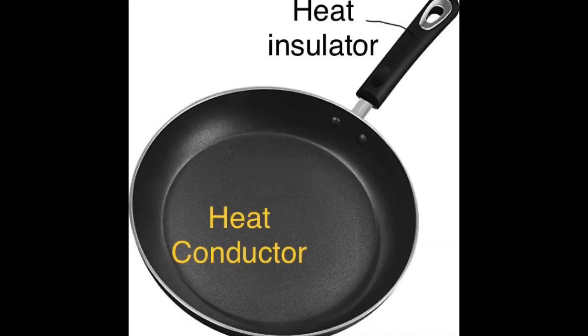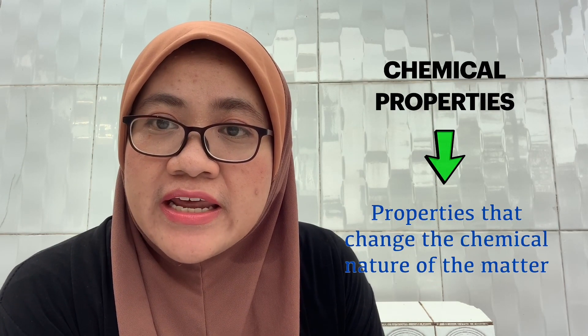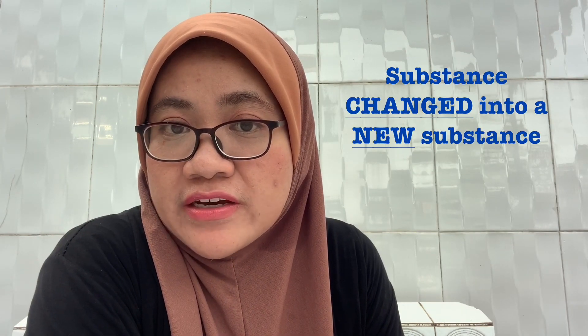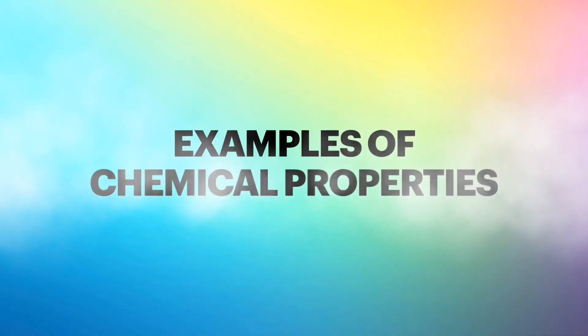Plastic is a good heat insulator and metal is a good heat conductor. Now, what is chemical property? Chemical property is a property that changes the chemical nature of a matter. It can be determined by the ability of a pure substance to combine with another substance, or by a substance changing into a new substance due to an external factor. For example, petrol is flammable when exposed to heat and oxygen — it can catch fire.